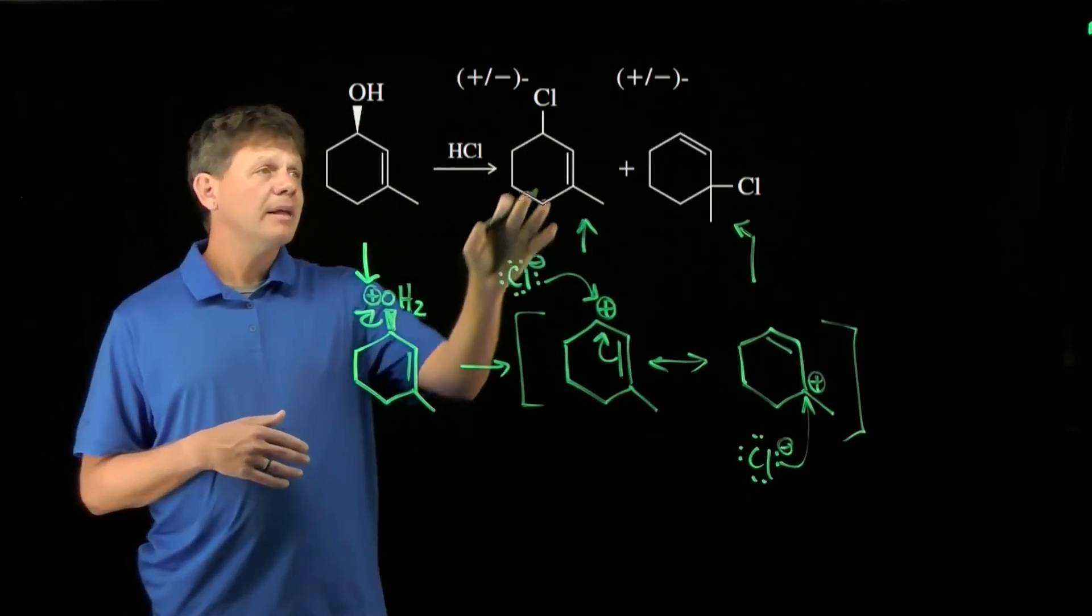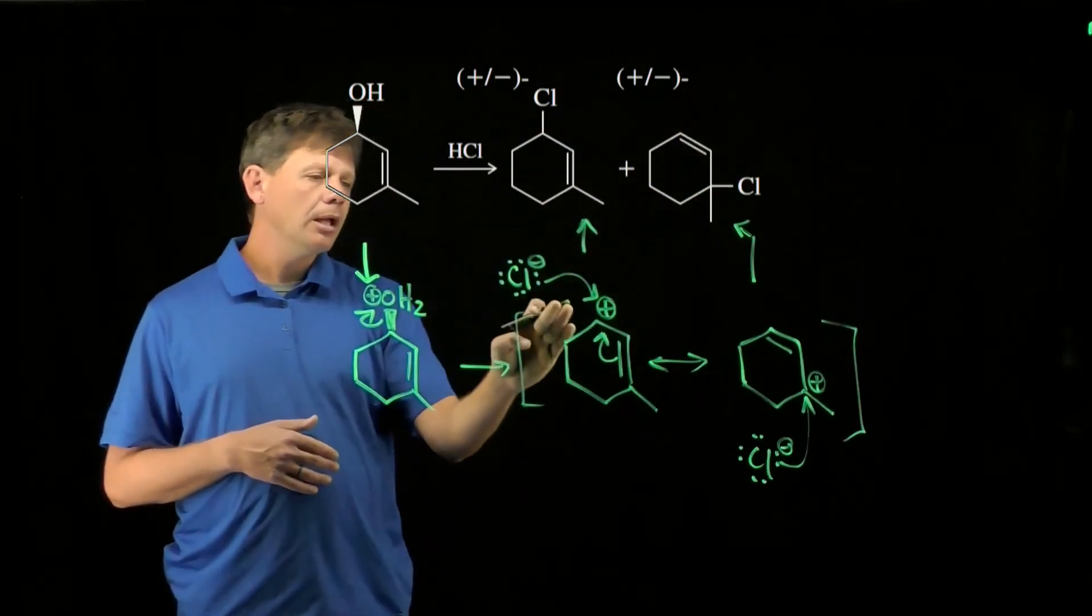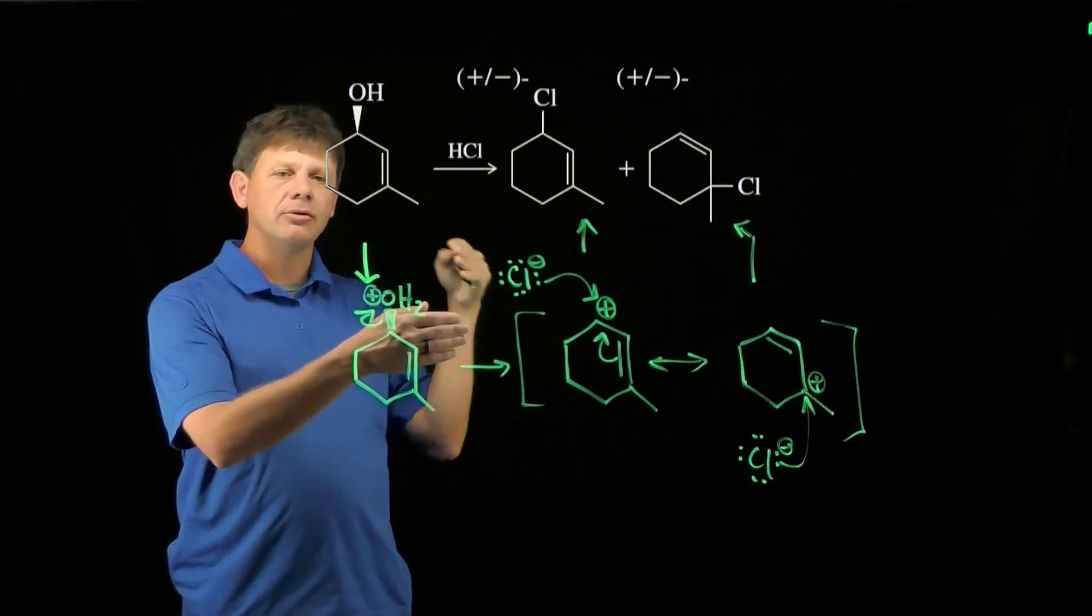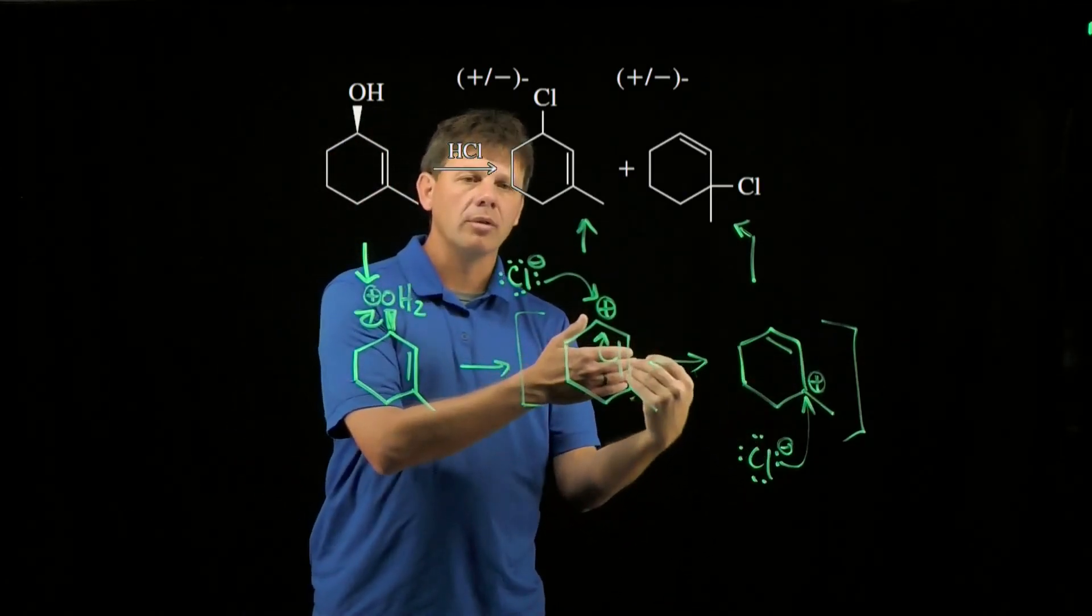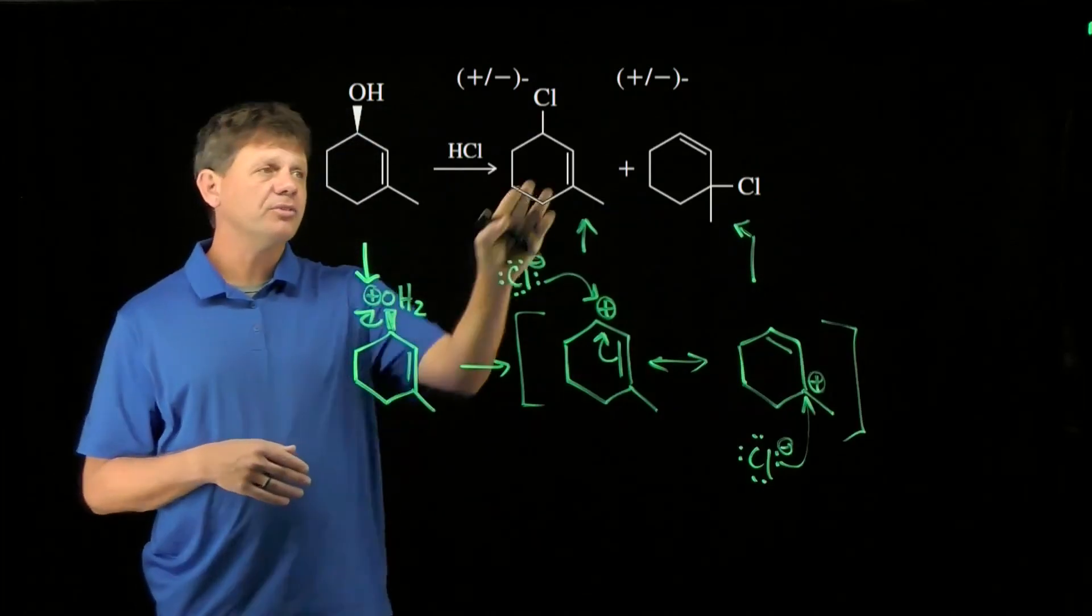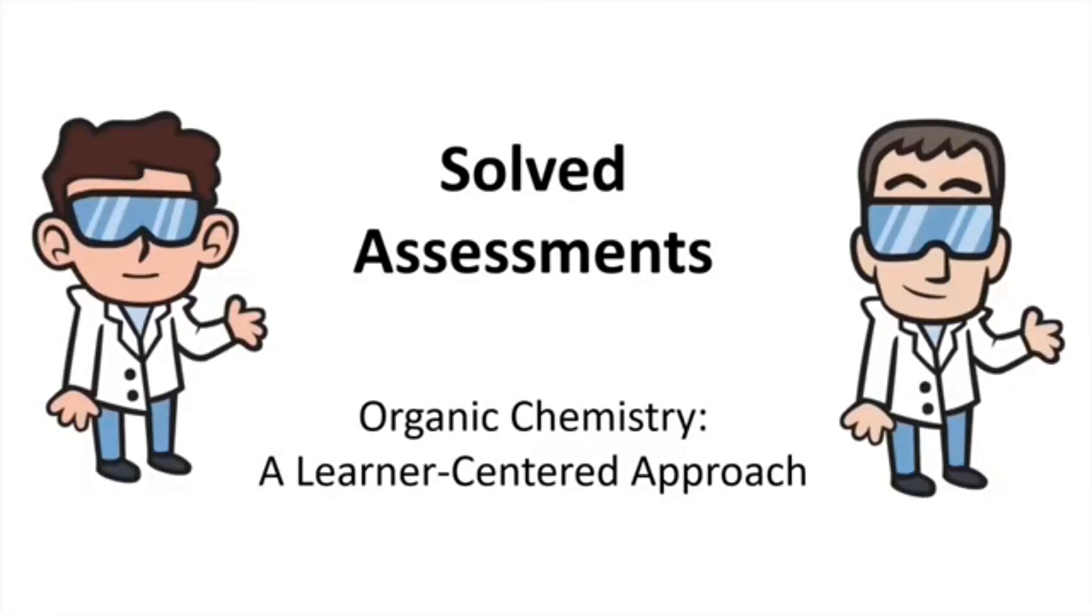I should point out that in each case, both of these are forming a racemic mixture, because when chloride attacks this carbocation, it can do so from the front or the back. And so we expect a racemic mixture of both of those two products.